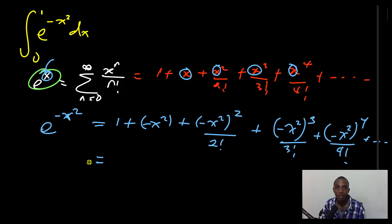So let's try to write this better by removing the extra powers here. So this is 1 minus x squared. This is going to be plus x to the power 4 over 2 factorial.